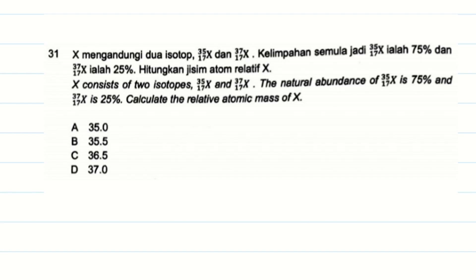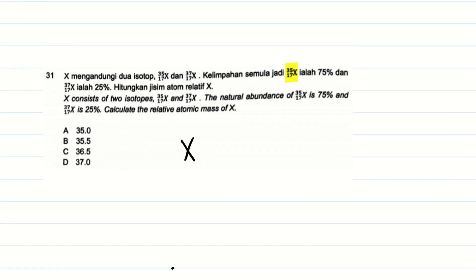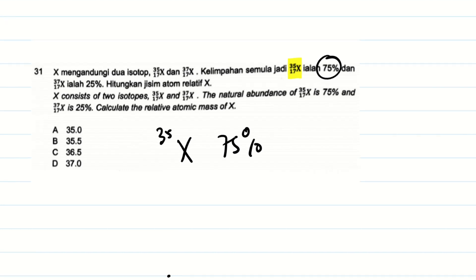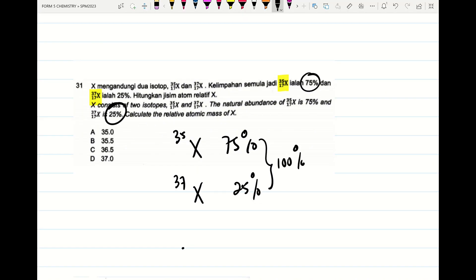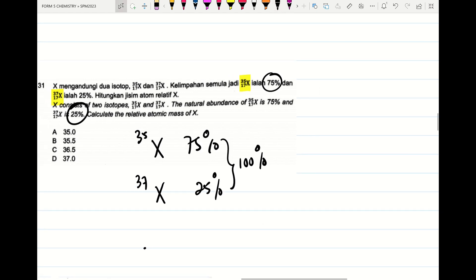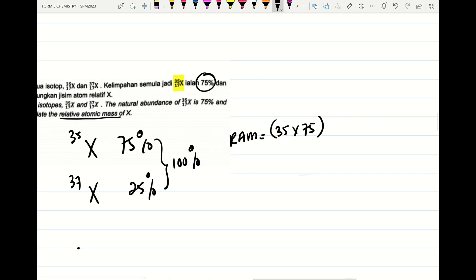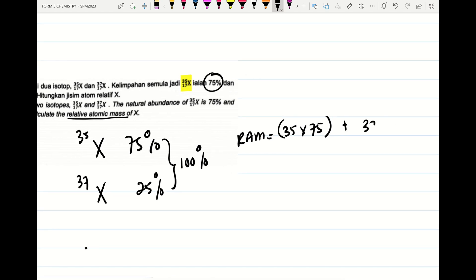Next, element X has a nuclear number of 35 with an abundance of 75%. The other isotope is X-37 with an abundance of 25%. Remember, the total percentage is 100%. To find the relative atomic mass of X, we take 35 times 75, plus 37 times 25.